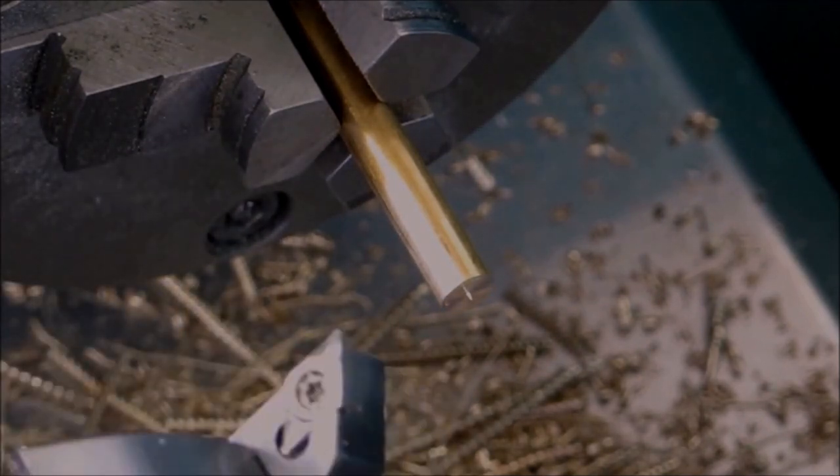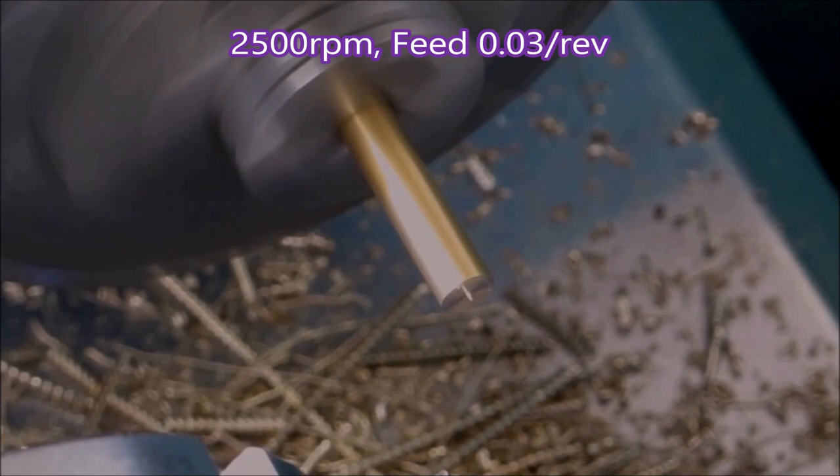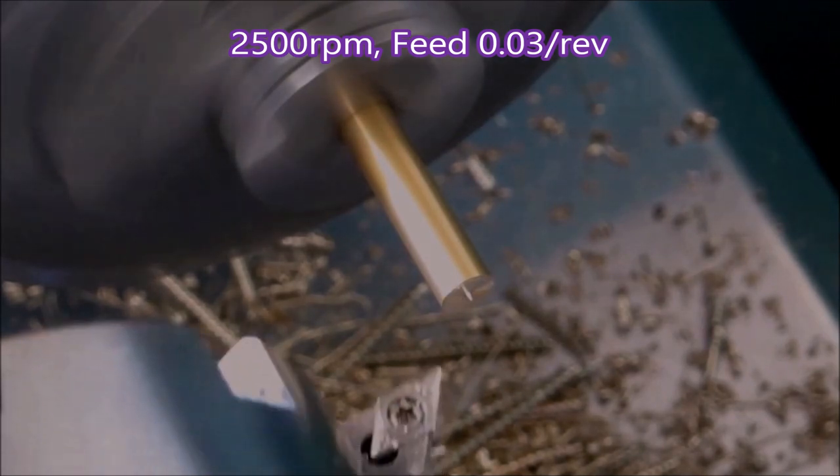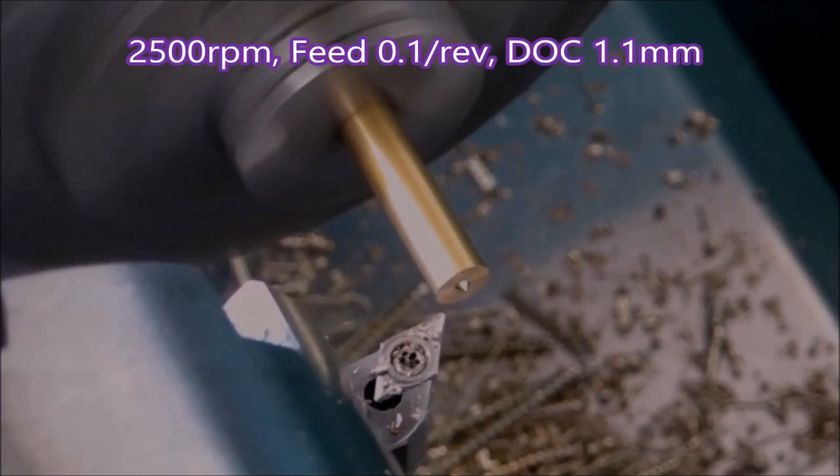When the spindle starts, it'll be 2500 RPM with a 0.03 feed for the very point, as you can see in the caption. And then it'll go to 0.1 feed per rev for the removal of the bulk of the stock.